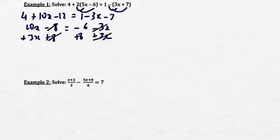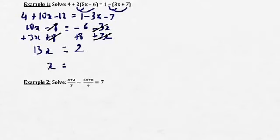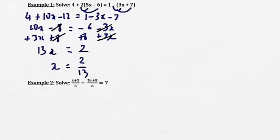Now I'm able to have on one side only the variable x and on the other side the non-variable term, which in this case is 2. So x is going to be equal to 2 over 13.